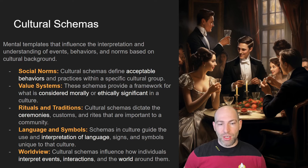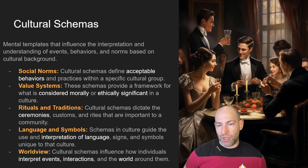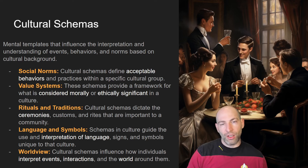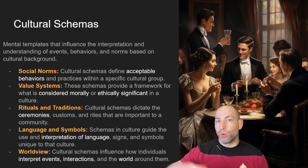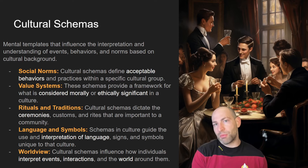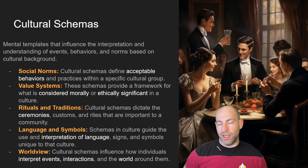Value systems are schemas providing a framework for what is morally or ethically significant. Using the Victorian example from Bridgerton: a woman's chastity was considered incredibly significant — a man could sleep around, but if a woman was even caught alone with a man, her virtue became suspect and she was considered morally lowered in the eyes of her peers. Rituals and traditions, like ballroom dancing or knowing the social rank of everyone in a room — which dictated who could approach whom or make introductions — are examples of social traditions rooted in cultural schemas.